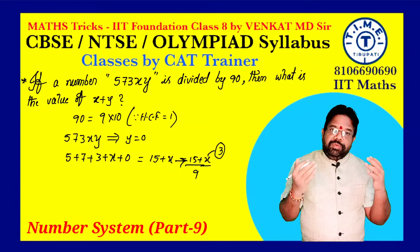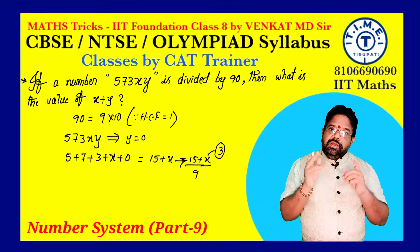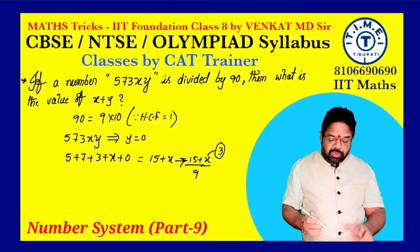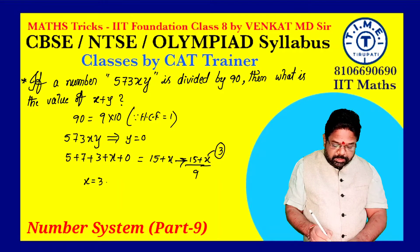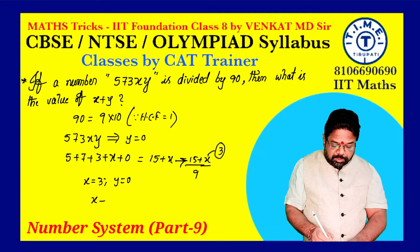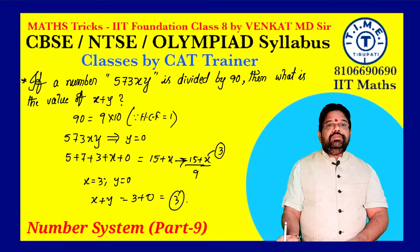We identified the least value of X, which is 3. The value of Y is 0. We require X plus Y. So 3 plus 0 equals 3. The answer for this question is 3 — X plus Y equals 3.